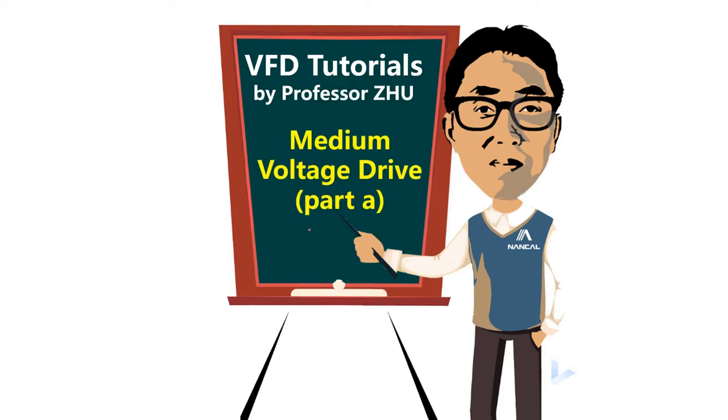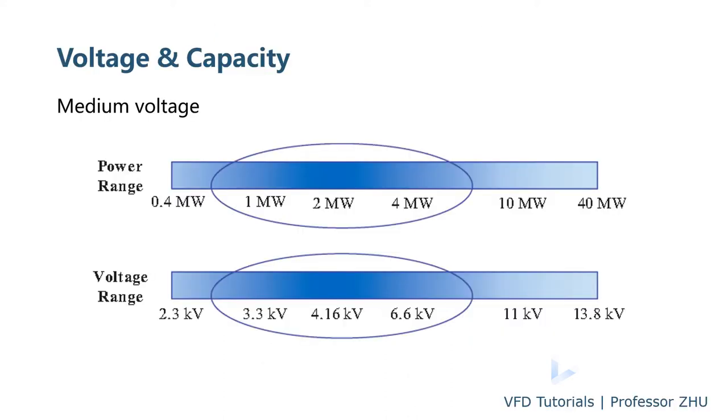In this section we will talk about the medium voltage drive, part A. For medium voltage drive with a medium voltage motor, the power rating is typically from 400 kilowatt to 40 megawatt.